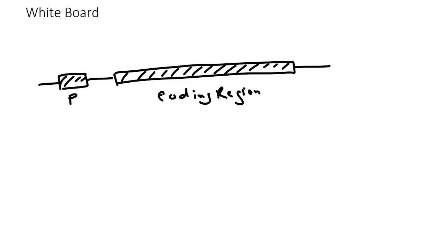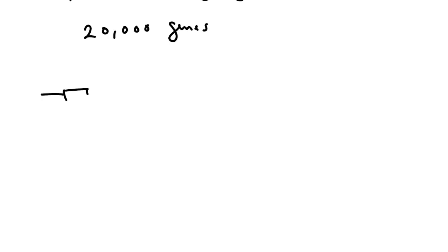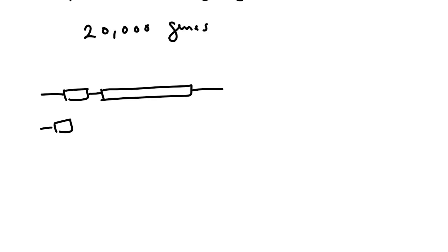Within a cell there are roughly 20,000 or more genes, at least in a human cell. Every cell in the human genome will have an equivalent number of genes — all those genes are available to every cell. Now we know that during the process of differentiation, some of these genes are permanently silenced.